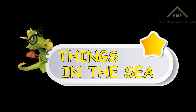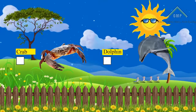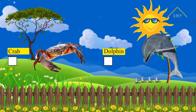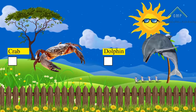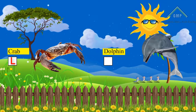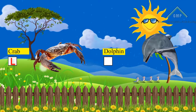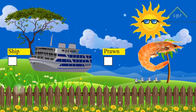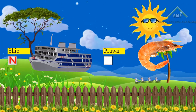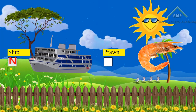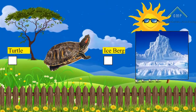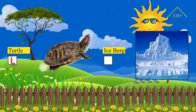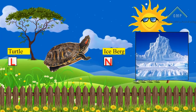Things in the sea. Write L for living things and N for non-living things. Cove — living thing — L. Dolphin — living thing — L. Ship — non-living thing — N. Prawn — living thing — L. Turtle — living thing — L. Iceberg — non-living thing — N.